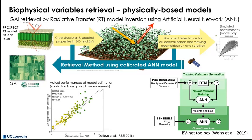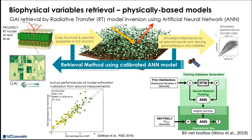Physically-based models are much more complex as they are built on radiative transfer modeling. These radiative transfer models are built on a detailed description of the structural and optical properties at the leaf level or at the entire vegetation canopy level.